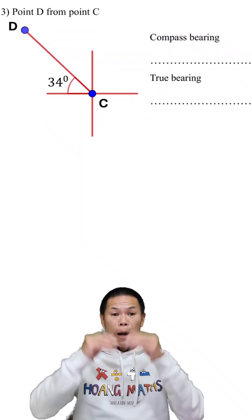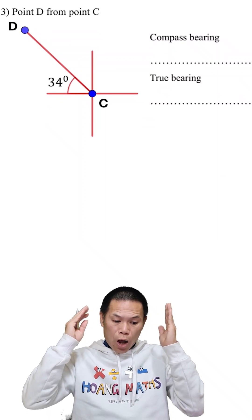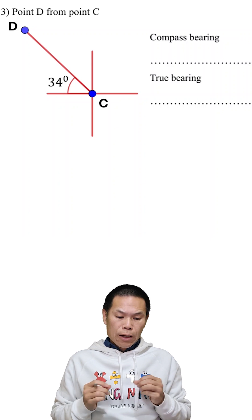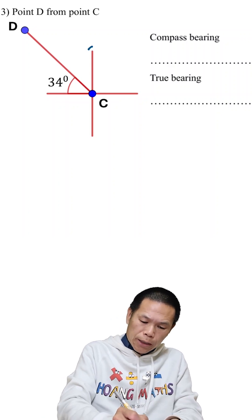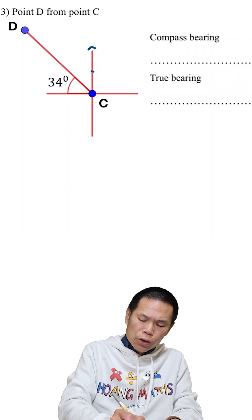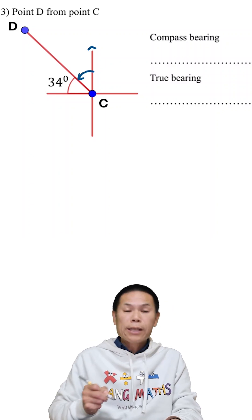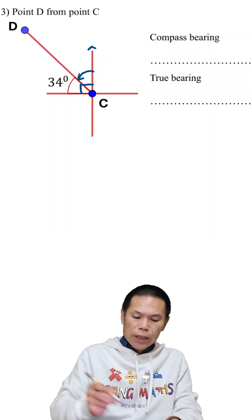Question number three: the compass bearing of point D from point C. We start from north and go toward this way which is east, so we know that this is 90 degrees.